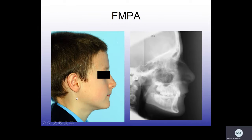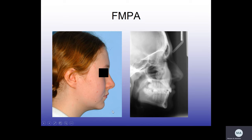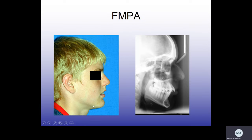If the two lines meet anterior to the occipital area, this is an increased Frankfurt mandibular plane angle. If they meet posterior to the occipital area, this is a reduced Frankfurt mandibular plane angle. Clinically, you use a ruler or the back of your mirror to identify the lower border of the mandible; if using a photo, you confirm with a radiograph. For example, this patient has an average Frankfurt mandibular plane angle; this lady has a reduced angle; and this patient has a steep mandible, giving an increased Frankfurt mandibular plane angle.